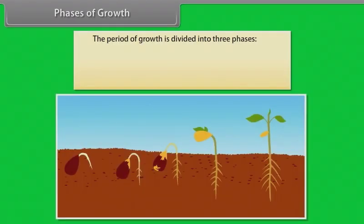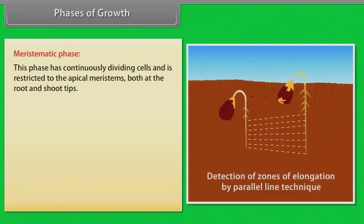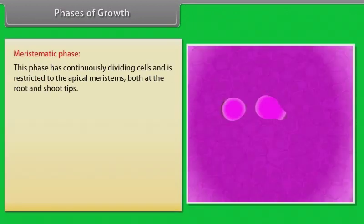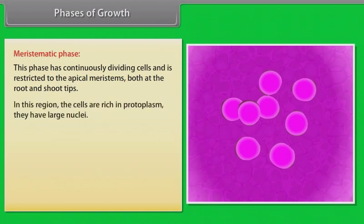Phases of growth. The period of growth is divided into three phases: meristematic, elongation, and maturation. Meristematic phase - this phase has continuously dividing cells and is restricted to the apical meristems, both at the root and shoot tips. In this region, the cells are rich in protoplasm. They have large nuclei.